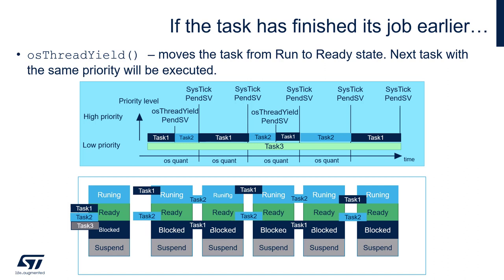The good choice would be to move our active task from running mode to the ready state. For this we have a dedicated function called osThreadYield. Let's have a closer look at how it works.